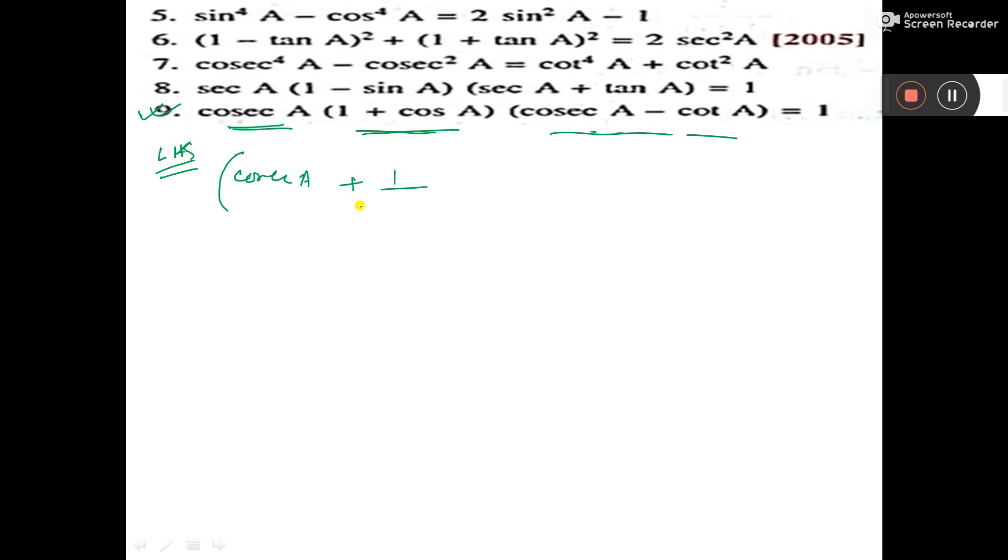I am writing cosec means 1 by sine, and cosec was there. Here, the second one I am doing nothing. Cosec A minus cot A.